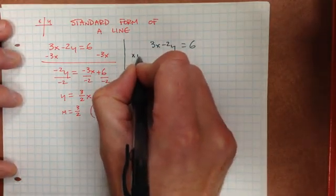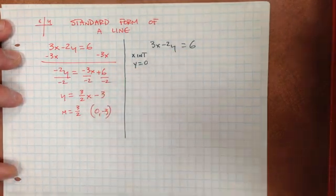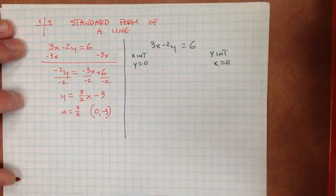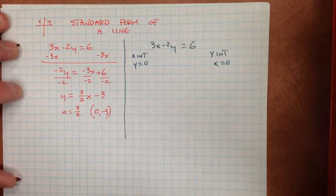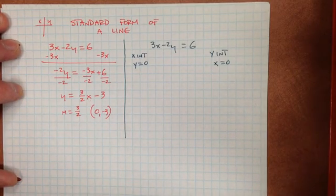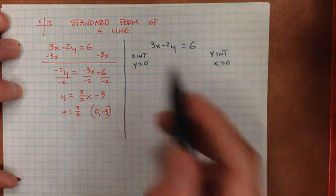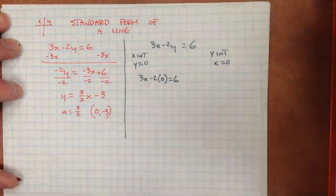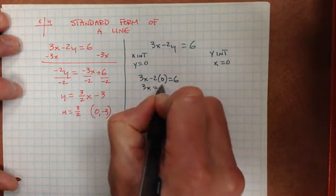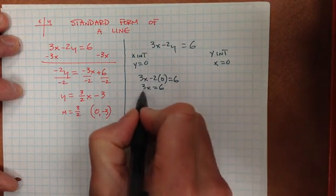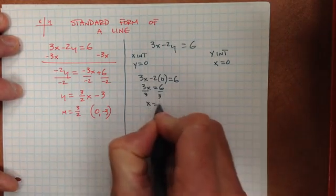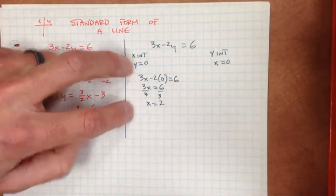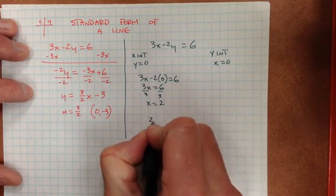To find an x-intercept, make y equal to 0. To find a y-intercept, make x equal to 0. So if we do some substituting and solving with these two different scenarios, we're going to end up with two different points — an x-intercept and a y-intercept. When I put in y equals 0, I get 3x minus 2 times 0 equals 6, simplified to 3x equals 6, divide both sides by 3, x equals 2. The point would be (2, 0).